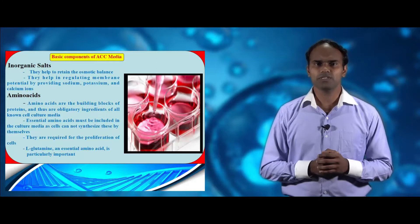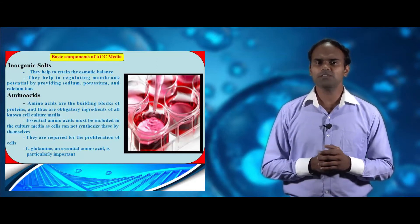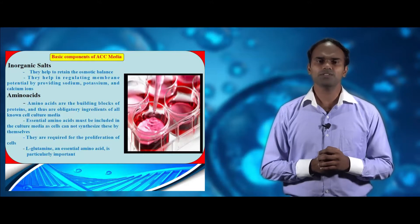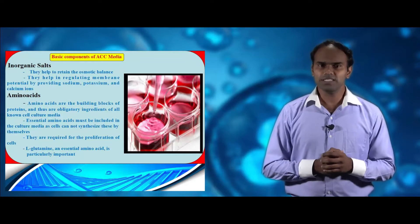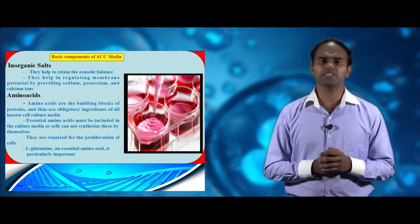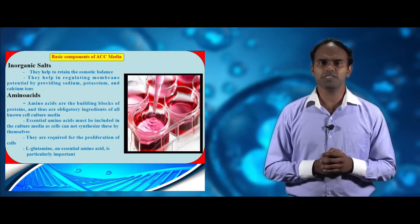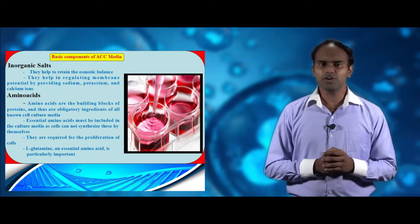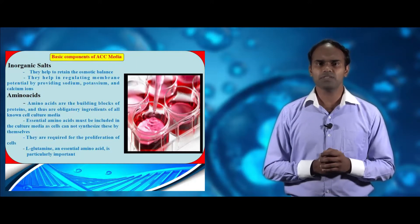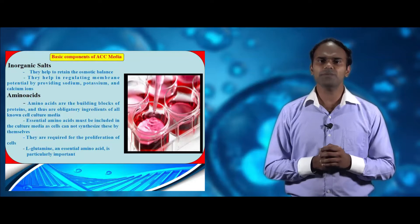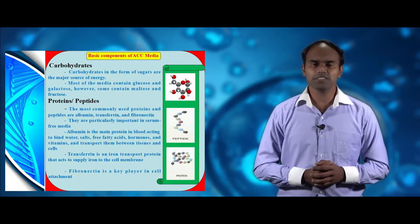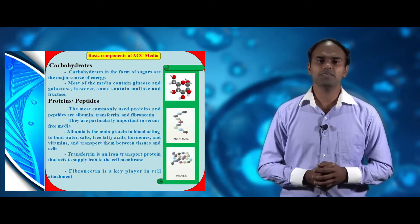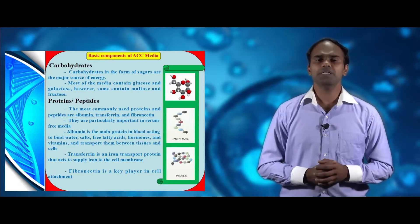Inorganic salts help to retain osmotic balance and also help to regulate membrane potential by providing sodium, potassium and calcium ions. Next, amino acids — as we all know, they are the building blocks for proteins, so they are obligatory ingredients in many known cell culture media. Essential amino acids need to be added in the animal cell culture media as they cannot be synthesized by cells themselves. Amino acids are very important for cell proliferation. For example, L-glutamine is a very important essential amino acid.